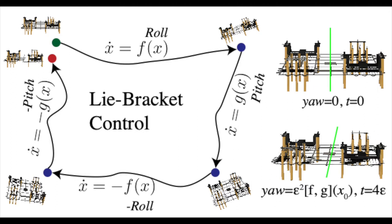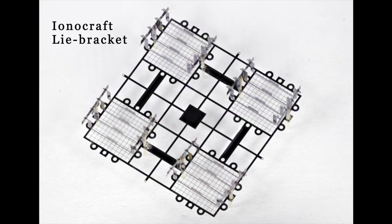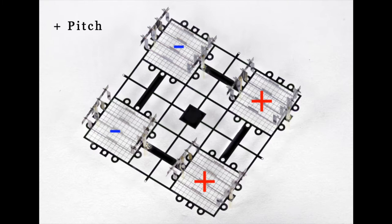In this case, we actuate pitch and roll to generate yaw. The ionocraft is shown here with four thrusters. First, two thrusters are increased for pitch, and then we increase two for roll, then decrease pitch and decrease roll.